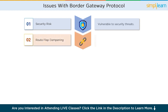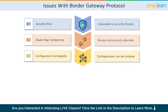Route flap dampening. In some cases, BGP routers may experience route flapping, where routes continuously alternate between available and unavailable states. This can impact network scalability and routing decisions. Configuration complexity: BGP configurations can be complex and require expertise and careful planning to ensure proper implementation and optimal routing.